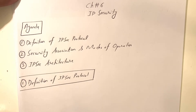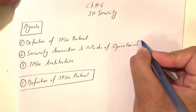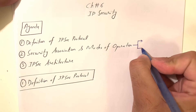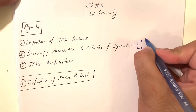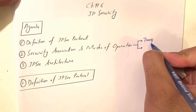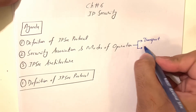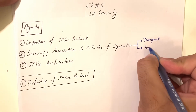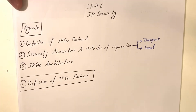Then modes of operation — there are mainly two modes we use in IPsec. One is the transport mode, and the second is called tunnel mode, which we typically use for VPN, virtual private network. We will discuss that in detail.